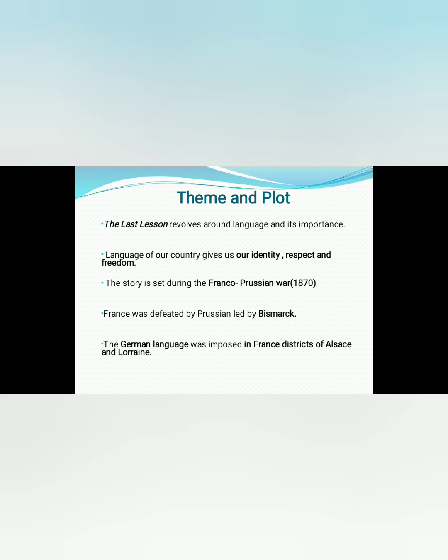The German language was imposed in the French districts of Alsace and Lorraine. After defeating France in the war, Prussia wanted to rule over not only the territory of France but also over the minds and hearts of the people. So they ordered German language to be taught instead of French in the schools.